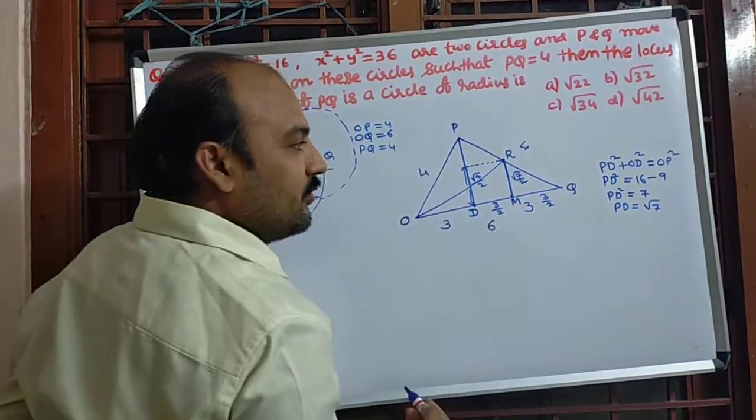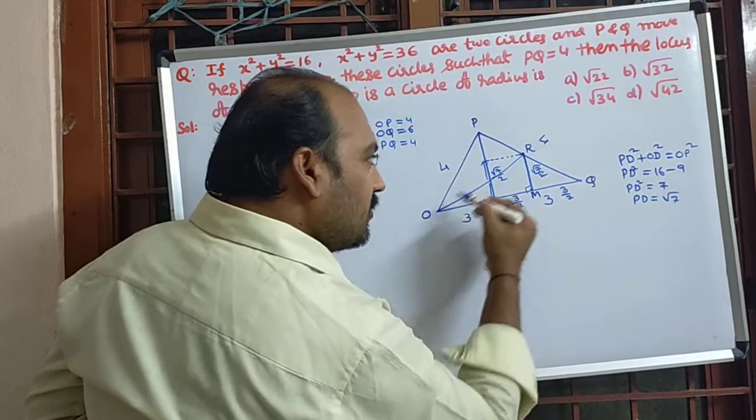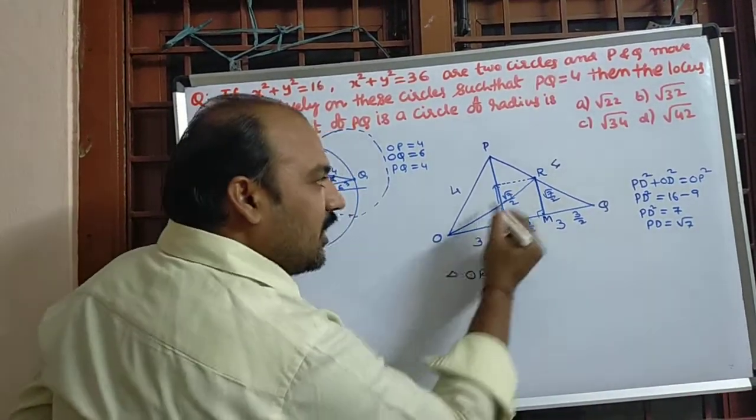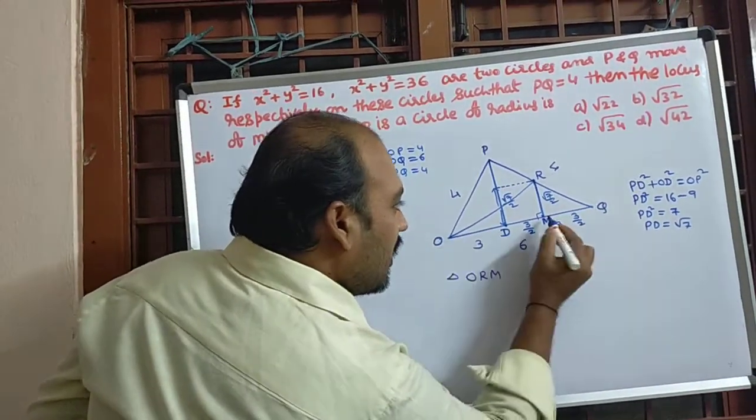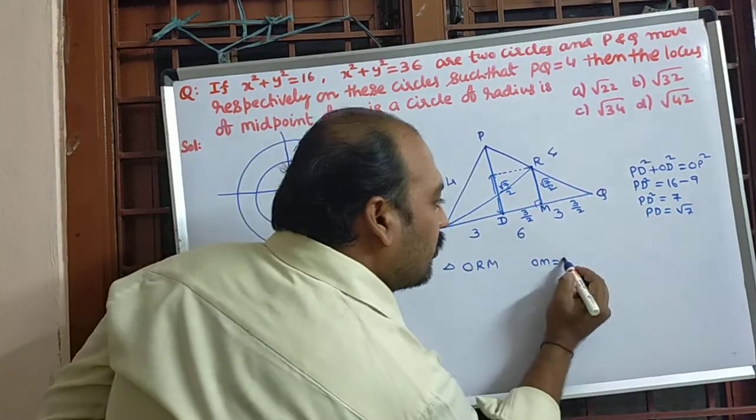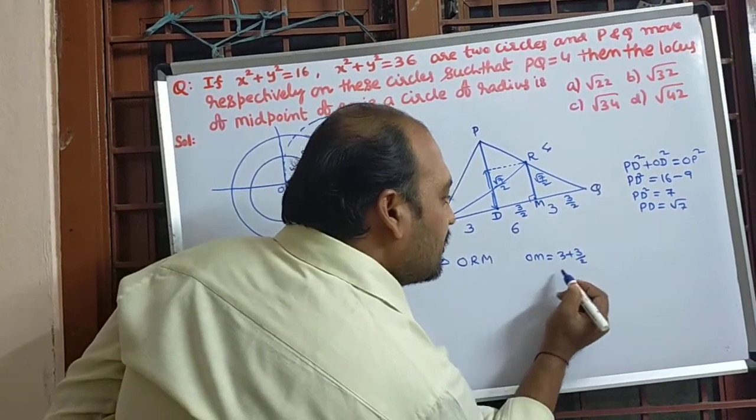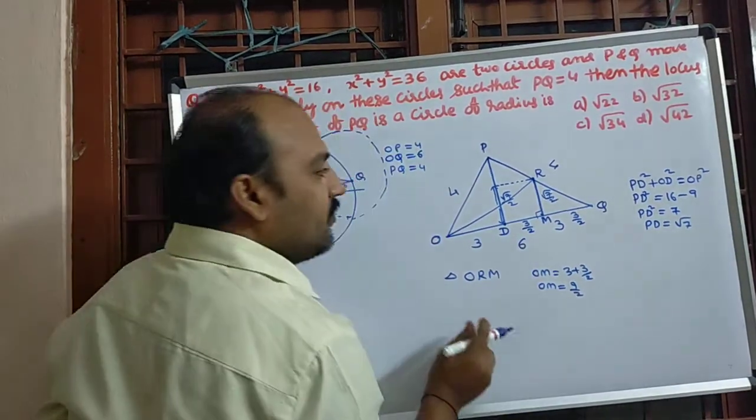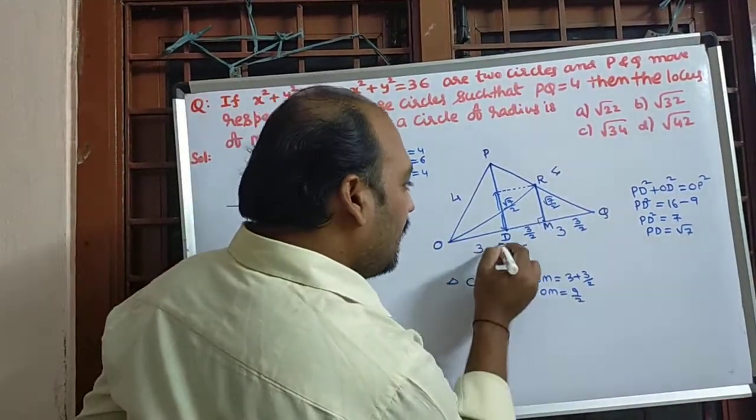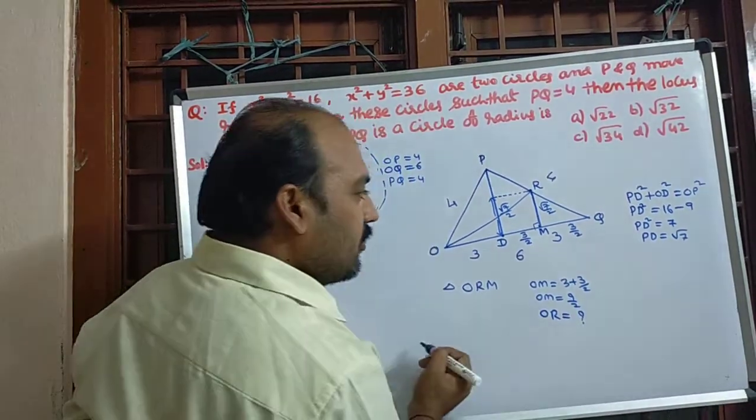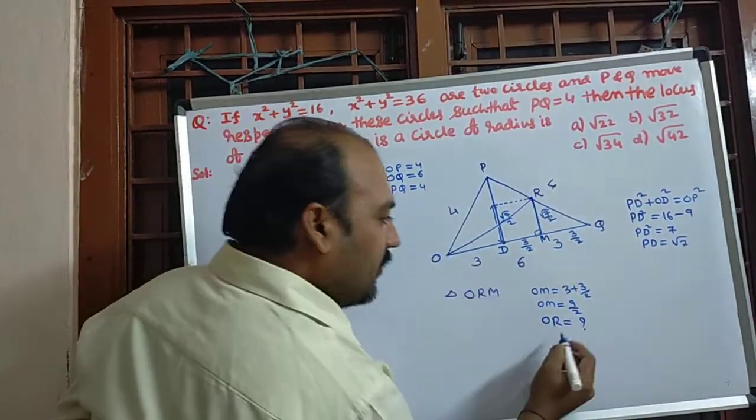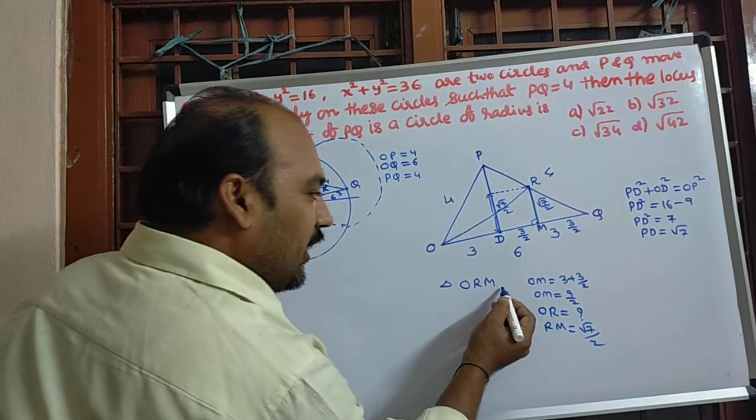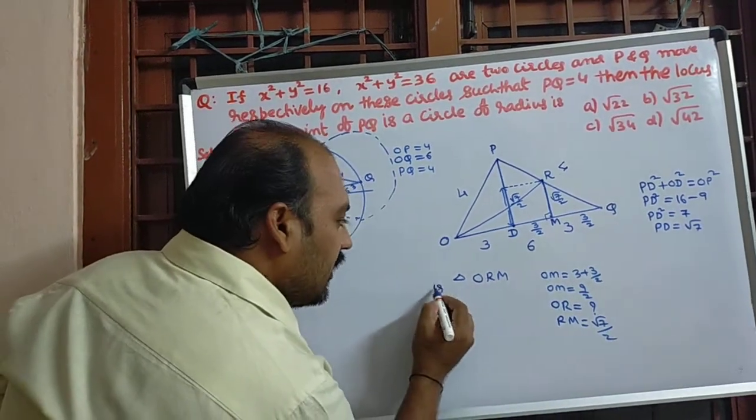√7/2. So I want OR value from this diagram. So OR, from triangle ORM, OM is equal to 3 + 3/2, which is equal to 6 + 3 = 9, 9/2. OM value is 9/2. Next, OR is required to calculate. OR is question mark. And RM is equal to √7/2. So it is a right angle triangle.